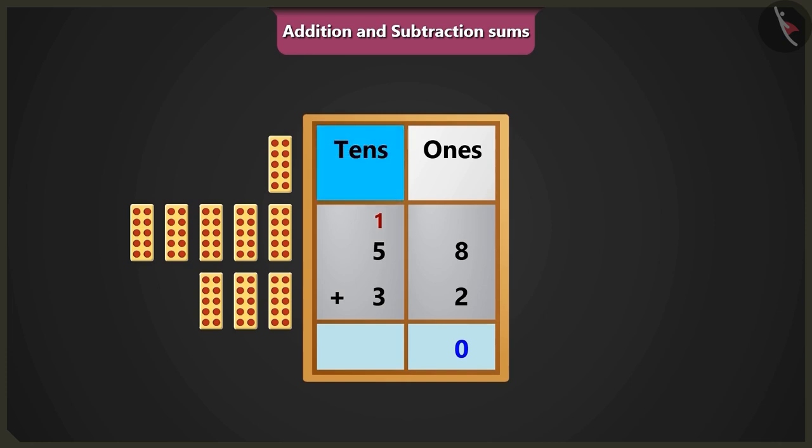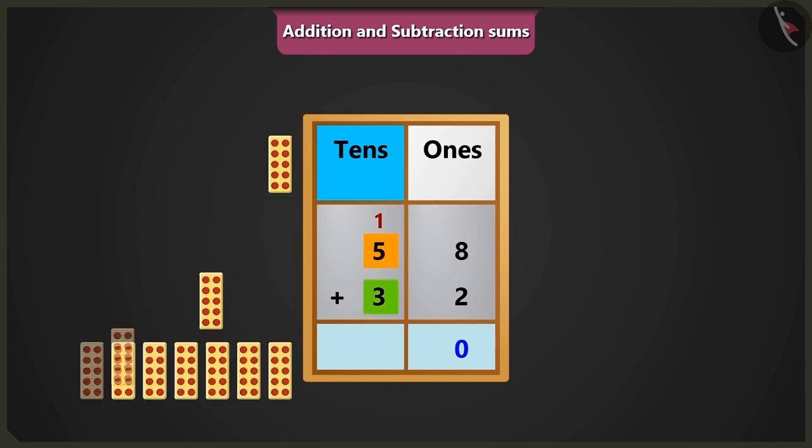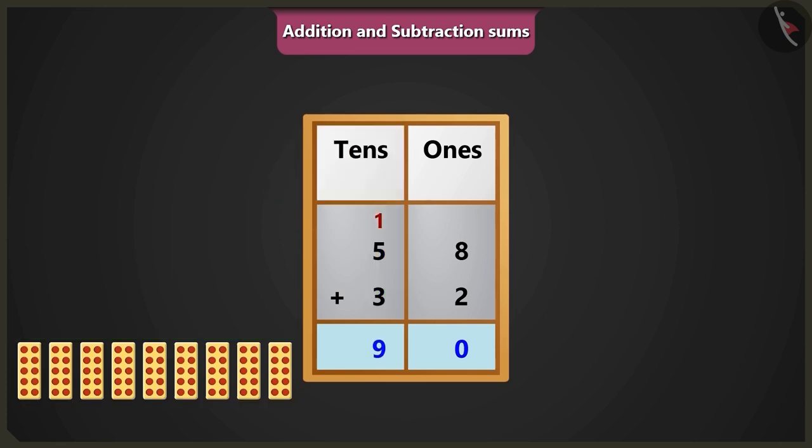Now if we will add 5 and 3 of the box of tenths, then after 5, it will be 6, 7, 8 tenths. And if we will add 1 carry over to 8 tenths, it will be 9 tenths.